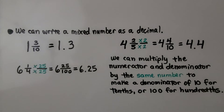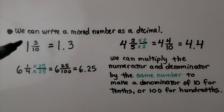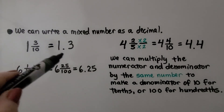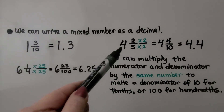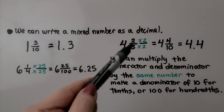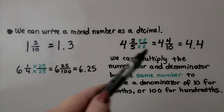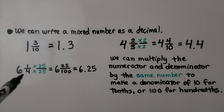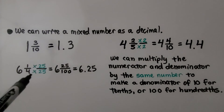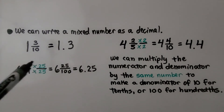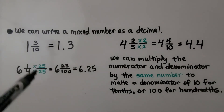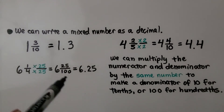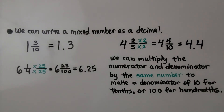We can write a mixed number as a decimal. 1 and 3 tenths is a mixed number equal to the decimal 1.3. For 4 and 2 fifths, we multiply the numerator and denominator by 2 to make the denominator 10 for tenths, giving us 4 and 4 tenths — the decimal 4.4. For 6 and 1 fourth, we multiply by 25 to make the denominator 100, giving us 6 and 25 one-hundredths — the decimal 6.25. We can multiply the numerator and denominator by the same number to make a denominator of 10 or 100.